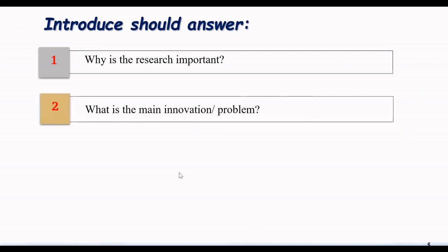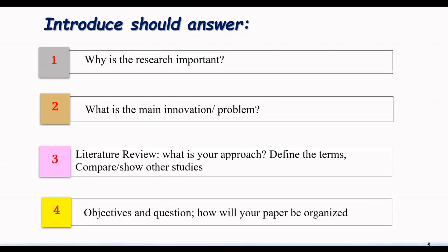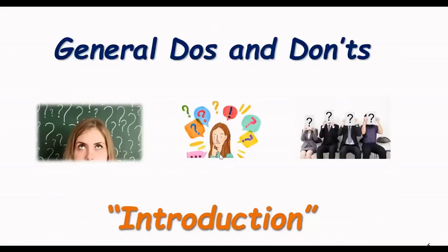If I want to summarize them: Why is the research important? What is the main innovation or problem? Research or review? What's your approach? Define the terms and compare it with other studies. And the last, objectives and questions. How will your paper be organized? These are four important tips to summarize for that.